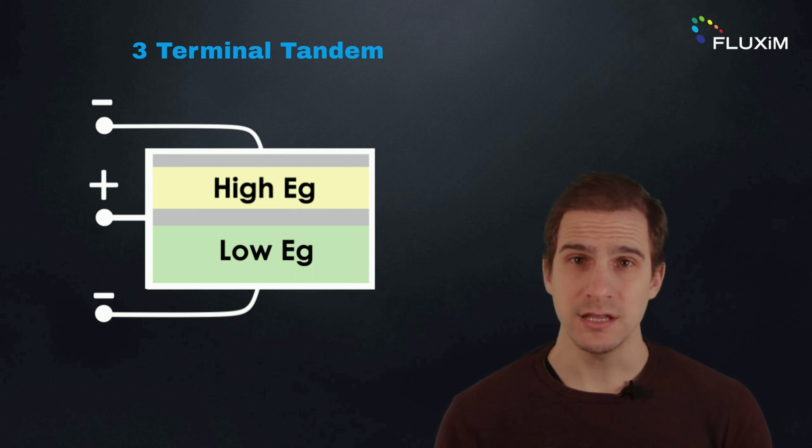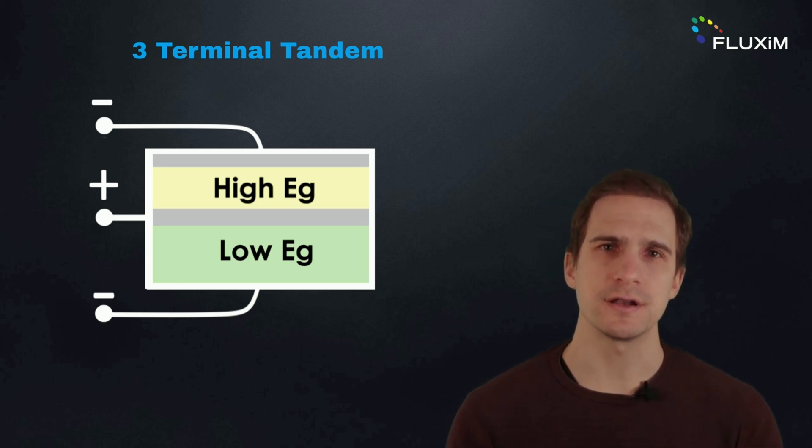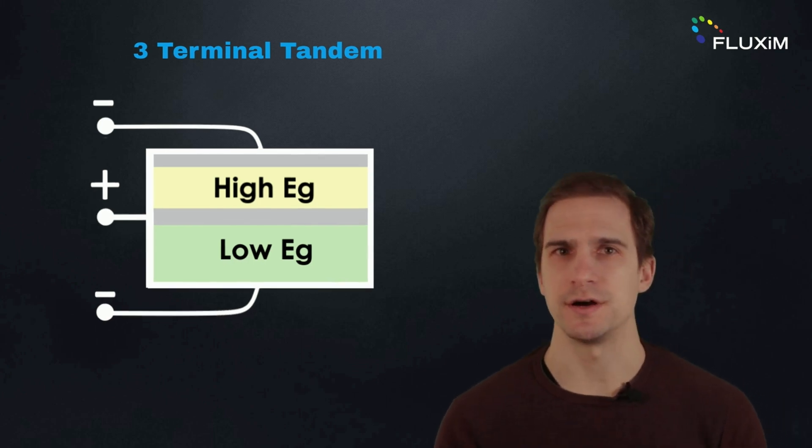Three-terminal tandems have a middle contact between the two subcells, avoiding the need of the tunnel junction and current matching as in two-terminal tandems. However, these types of devices need further investigation and will not be discussed further here.